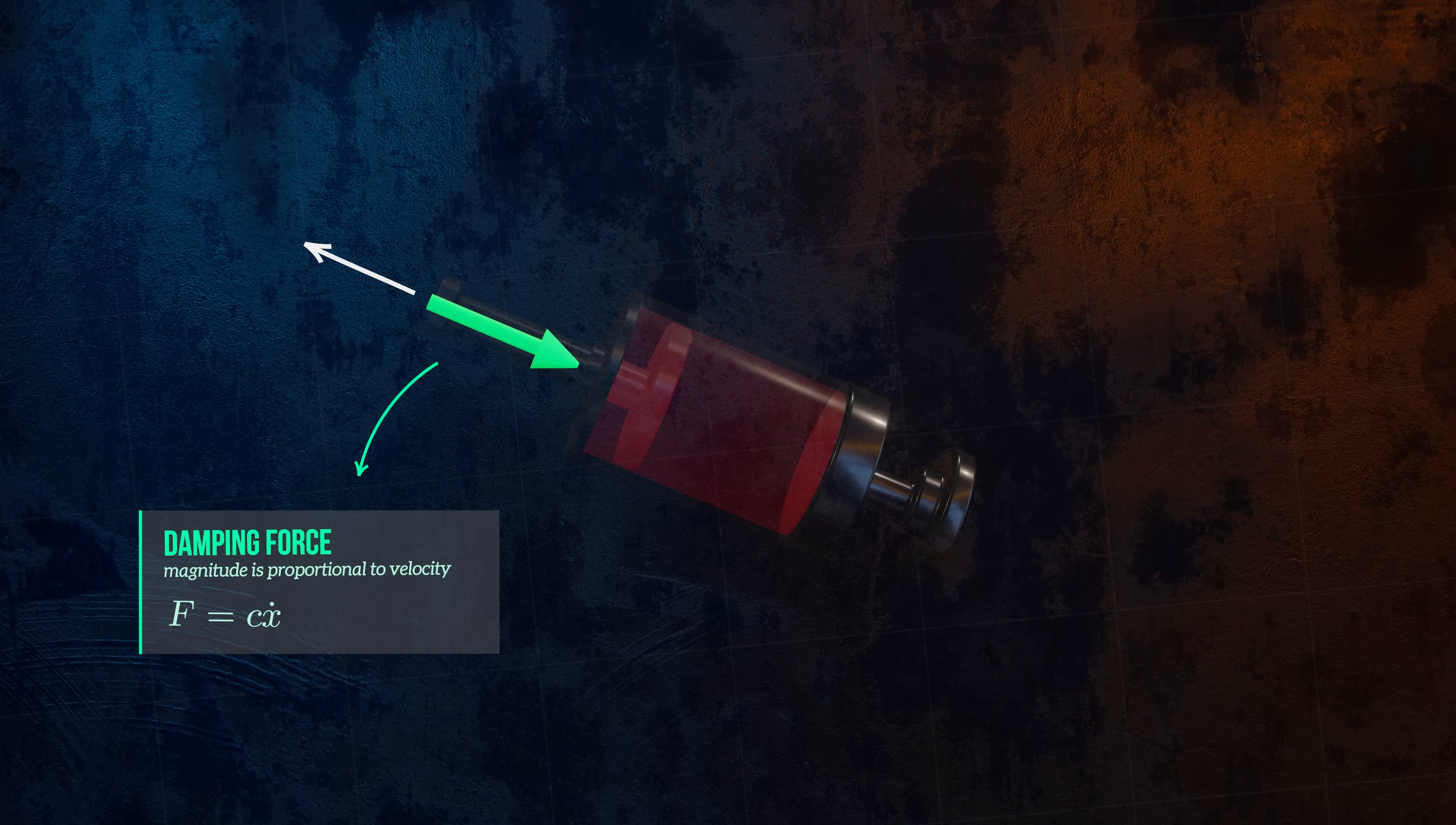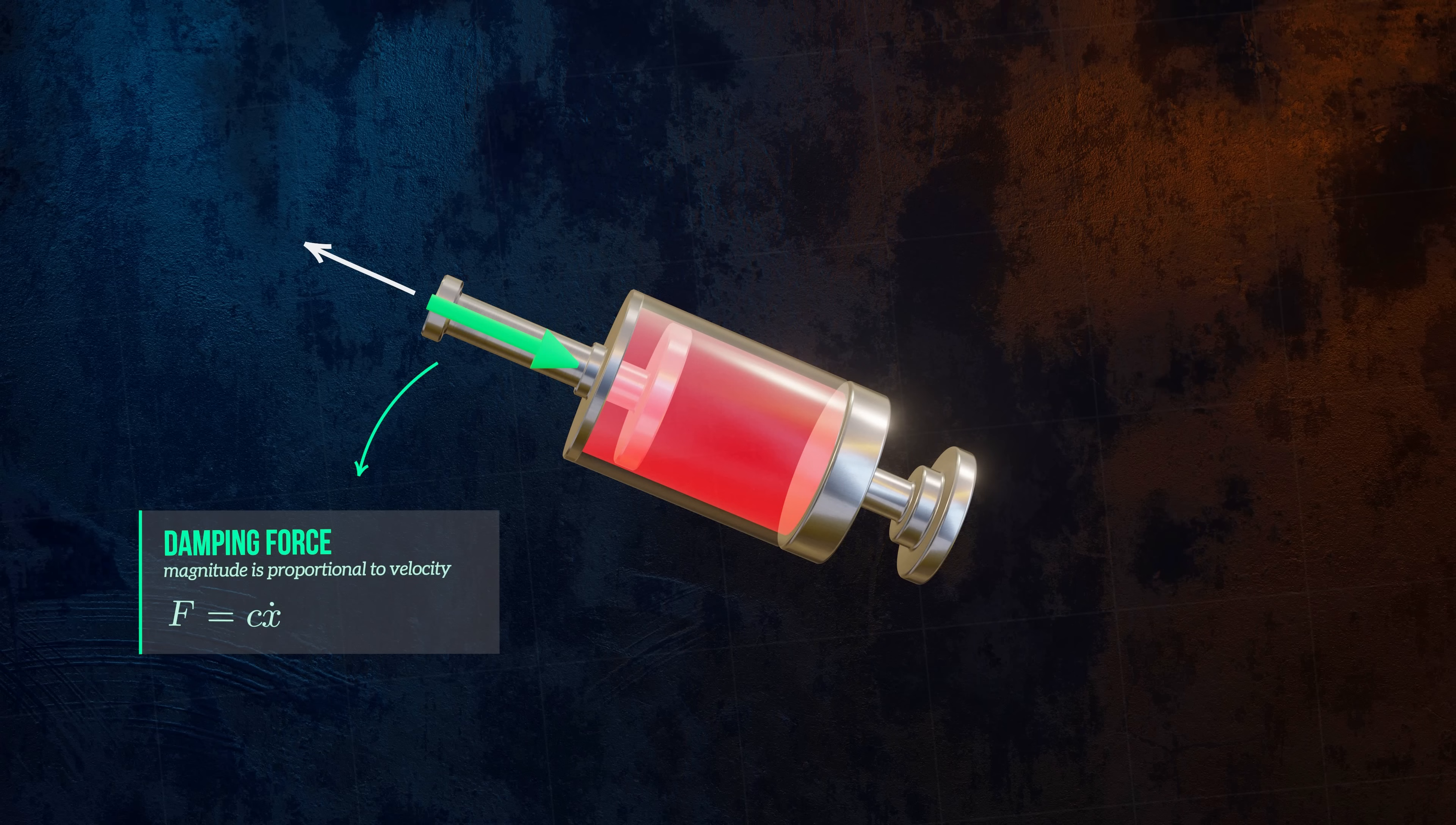This model of damping is called viscous damping because it behaves in a similar way to viscous forces in a fluid, which are proportional to the fluid velocity. There are other damping models, but viscous damping is commonly used because of its simplicity.